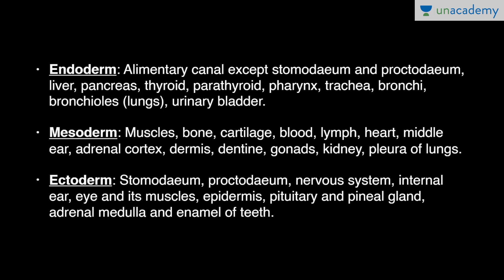Some organs like the alimentary canal — except stomodeum and proctodeum — are also derived from endoderm. Stomodeum is the precursor of mouth and proctodeum is the precursor of the anal canal. So except these two structures, the alimentary canal, liver, pancreas, thyroid, parathyroid, pharynx, trachea, bronchi, bronchioles, lungs and urinary bladder — all these structures are derived from endoderm.